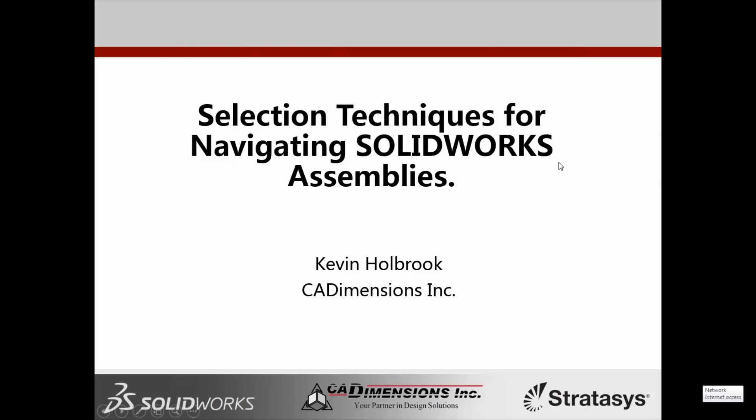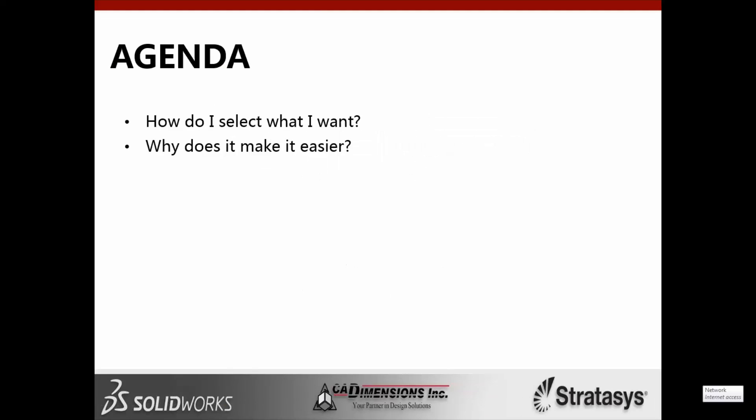I'm going to answer two questions today when it comes to assemblies. First, how do I select what I want? I do a lot of manual selecting when hiding, showing, suppressing, or creating configurations — and that's definitely not the most efficient method when you have all these other tools available. The second question is why does it make things easier? If you put these techniques into your process, you'll absolutely speed up your assembly work.